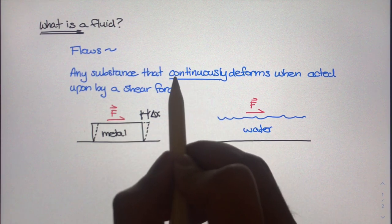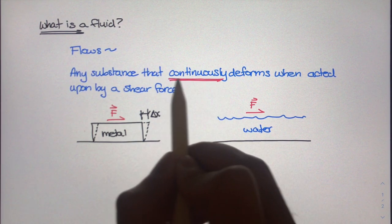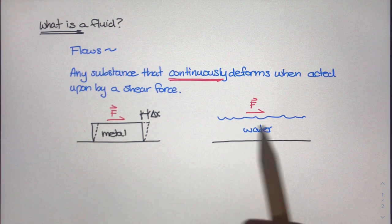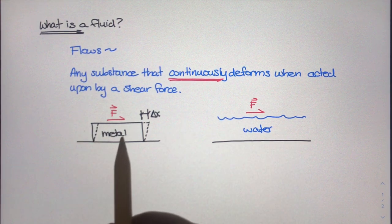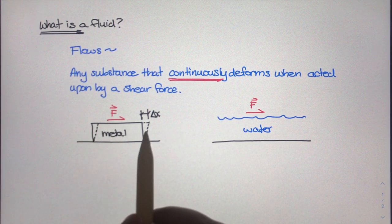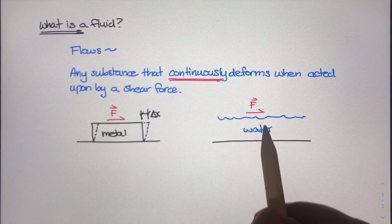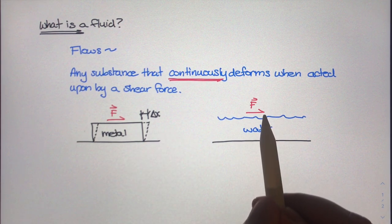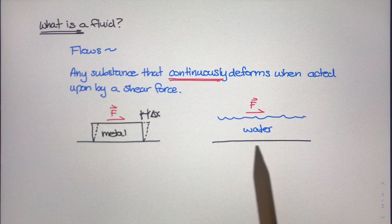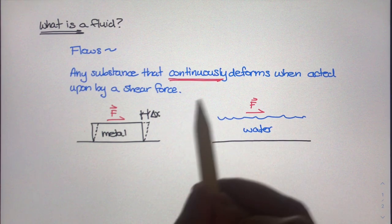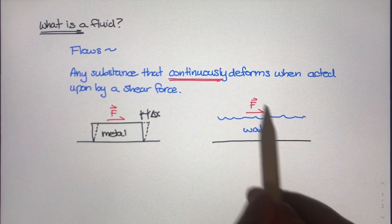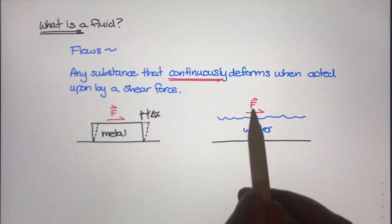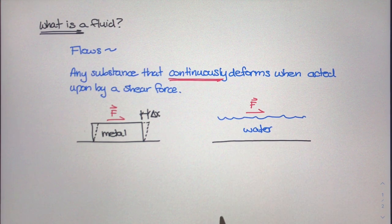So you can see why this part of the definition, continuously deforms, is so important. In the case of the metal block, it's going to stop eventually. And in the body of water, so long as that force is being applied, it's always going to deform. All the water molecules are always going to be moving past one another and sliding past one another as long as that force is being applied.